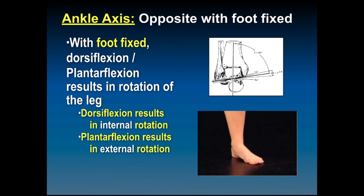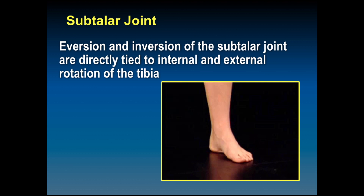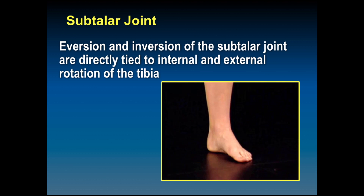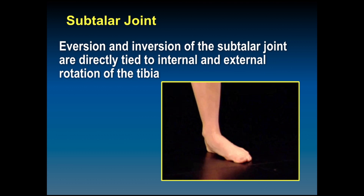The ankle axis, when the foot is fixed on the ground, is very important to understand as well. When the foot dorsiflexes, the tibia internally rotates, and when the foot plantar flexes, the tibia externally rotates. This is different than if the foot is not on the ground. The subtalar joint eversion and inversion are directly tied to internal and external rotation of the tibia.